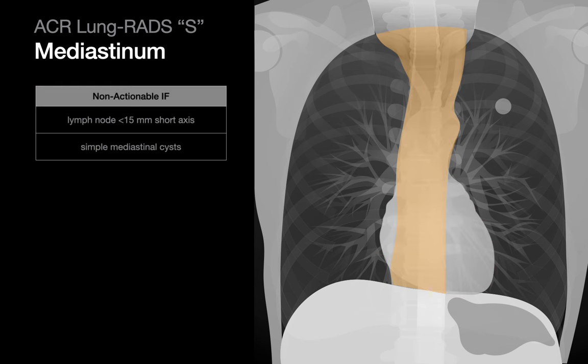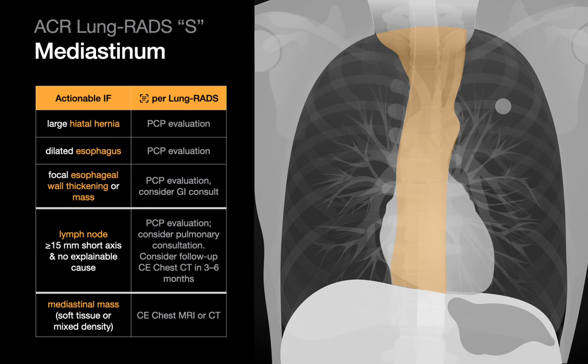In the mediastinum, lymph nodes under 15 mm short axis and simple mediastinal cysts are defined as non-actionable, while large hiatal hernias, dilated esophaguses, focal esophageal wall thickening or mass, lymph nodes of at least 15 mm short axis diameter with no explainable cause, and solid or mixed solid mediastinal masses may be actionable.